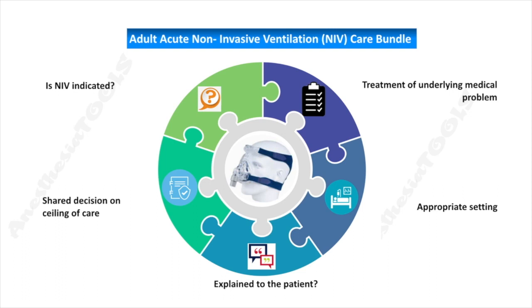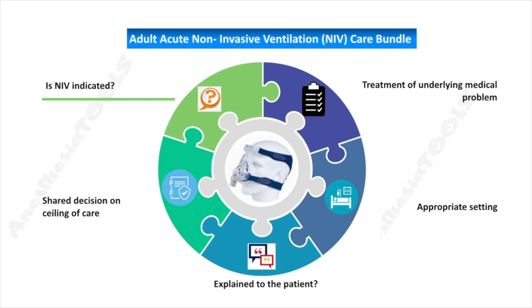Most institutions implement an NIV care bundle that checks or validates key points. First is the NIV indicator: does the patient have an acute respiratory acidosis, that is pH less than 7.35, pCO2 more than 45 mmHg, and whether an evidence-based indication is present — such as COPD exacerbation, neuromuscular disease, obesity hypoventilation, etc.